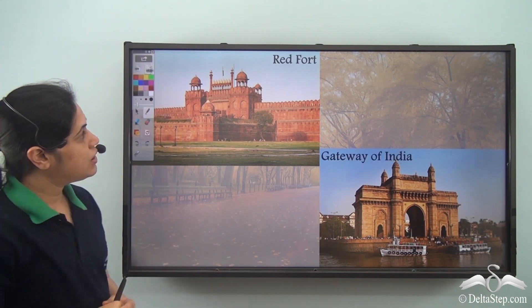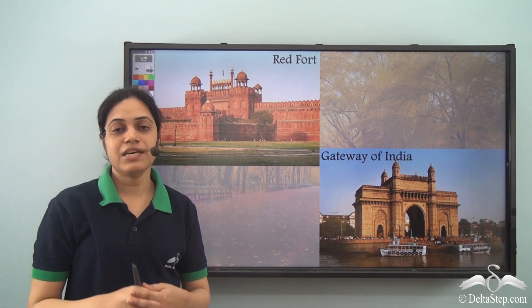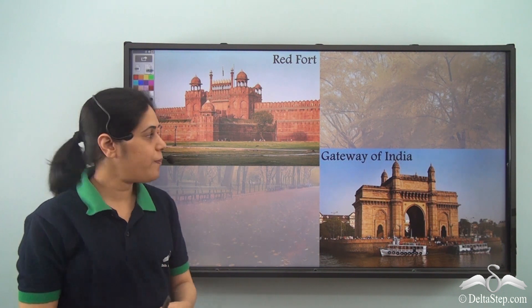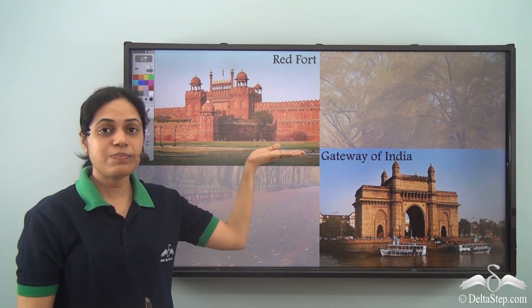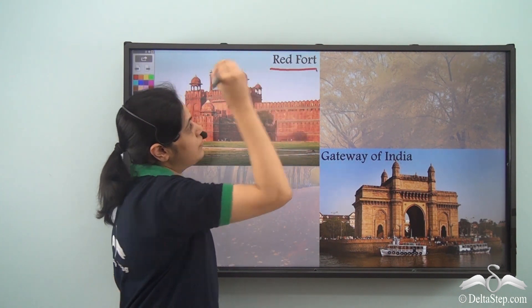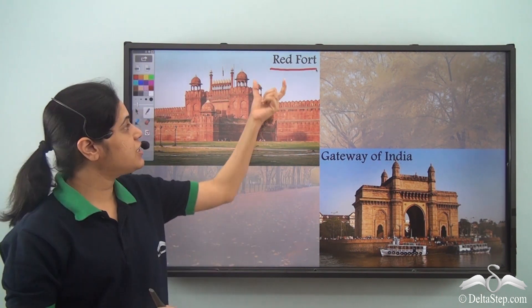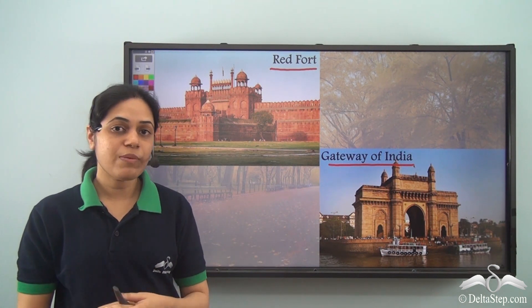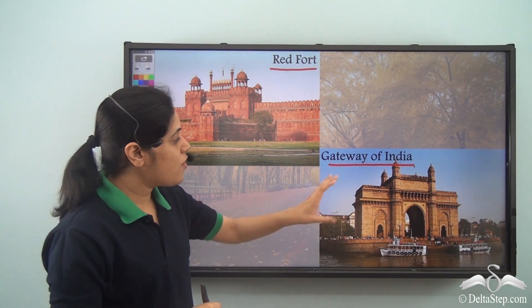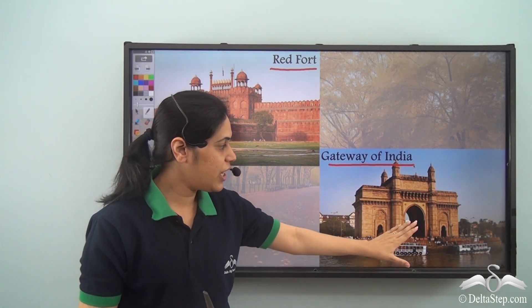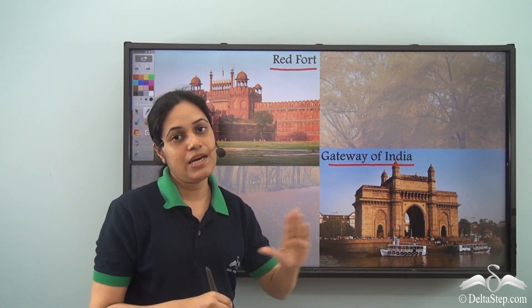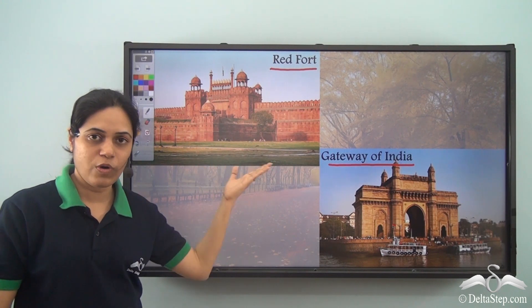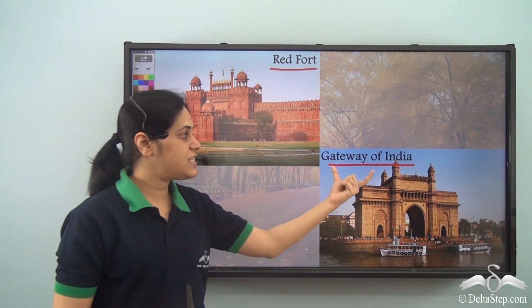But if I sit in a cab and tell the cab driver 'take me to the Red Fort,' then he will drop me exactly at this place — this particular monument called Red Fort. So it is the name of a specific monument. Similarly, Gateway of India is the name of a specific monument. When I say Gateway of India, you think about this and only this. When I say Red Fort, this particular monument comes to your mind. So these are specific names of monuments.